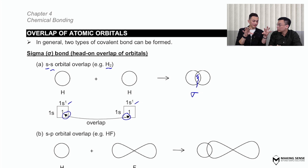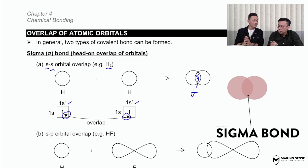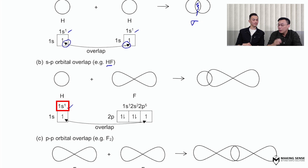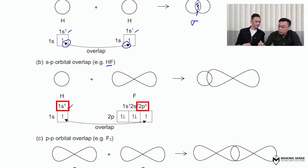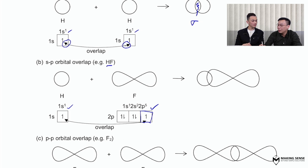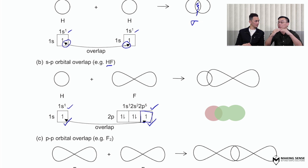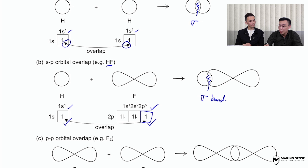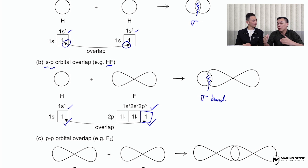So the two orbitals move close towards each other and crash into each other — that's how you form a sigma bond. For the HF molecule, the electronic configuration of H is 1s1. Fluorine has nine electrons. The focus is on the valence orbital, the outermost orbital, because the outermost electrons are the ones involved in bonding. One of the p orbitals of fluorine has an unpaired electron, so that orbital will overlap with the s orbital of hydrogen via a head-on overlap. This region of overlap is the sigma bond — an sp orbital overlap.